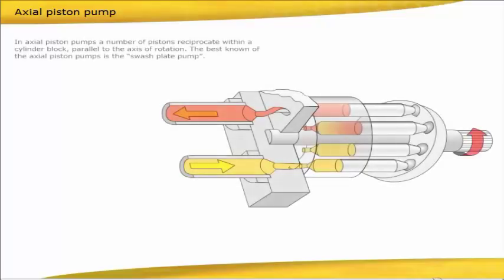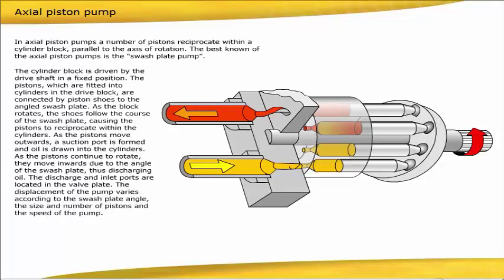In axial piston pumps, a number of pistons reciprocate within a cylinder block, parallel to the axis of rotation. The best known of the axial piston pumps is the swashplate pump. The cylinder block is driven by the driveshaft in a fixed position. The pistons, which are fitted into cylinders in the drive block, are connected by piston shoes to the angled swashplate. As the block rotates, the shoes follow the course of the swashplate, causing the pistons to reciprocate within the cylinders.